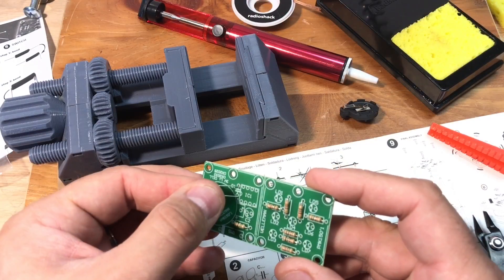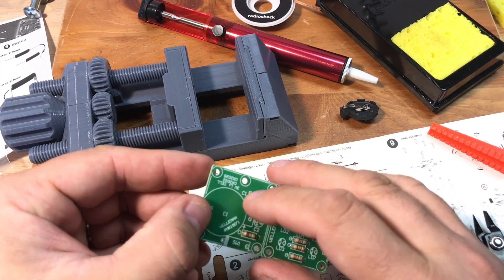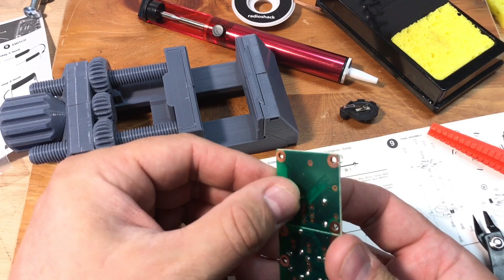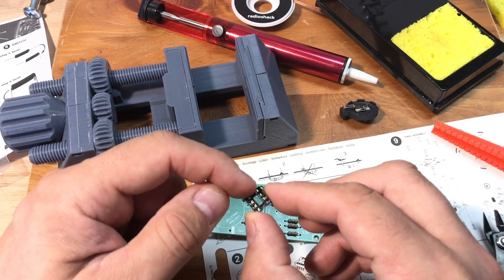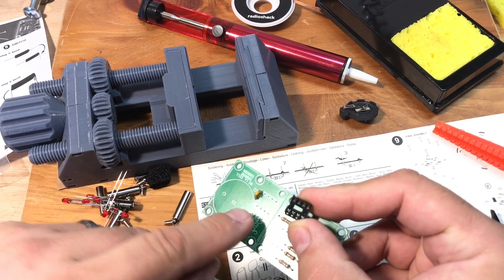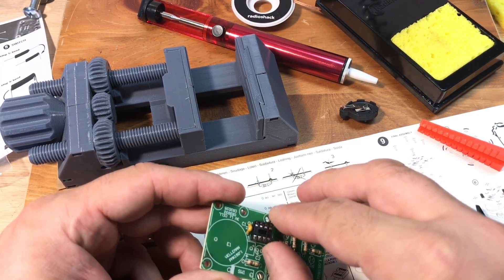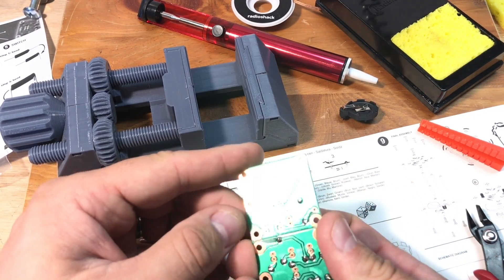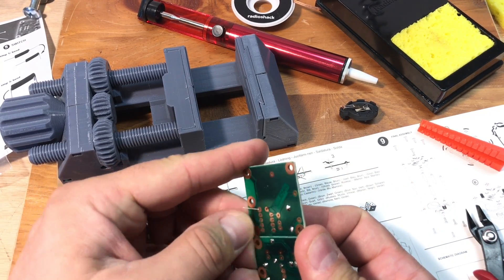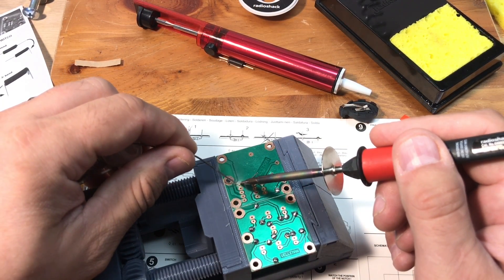Then it was time to move on to the next step and install the capacitor C1. This has no polarity, it can go in either way. So I put that in place, bent the leads, and then the socket. You have to make sure you get the notch lined up with the marking of the notch on the circuit board. That makes sure that everything is in line and pin 1 goes in the right place. I put that in place and just used my thumb to bend the leads over so it would hold itself while it was upside down.